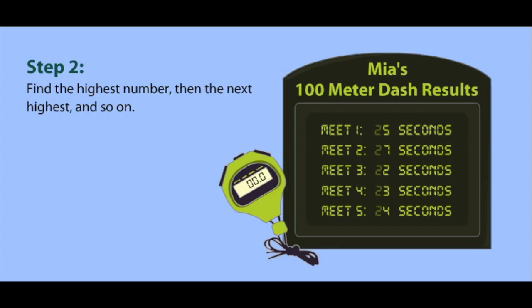The next step is to find the highest number, my slowest time. Then find the next highest number, then the next. As you can see, 27 is higher than all the other numbers. Great! Can you order the rest of the times from highest to lowest?